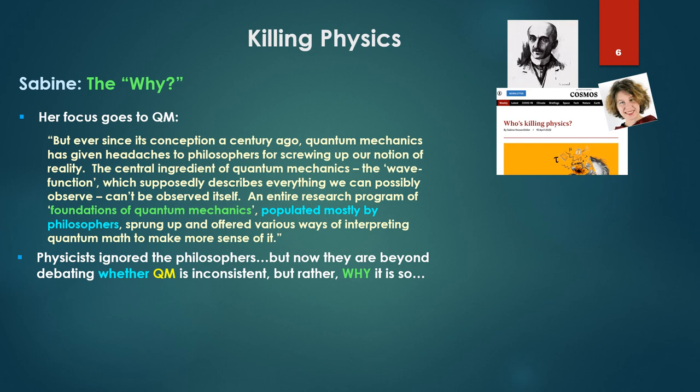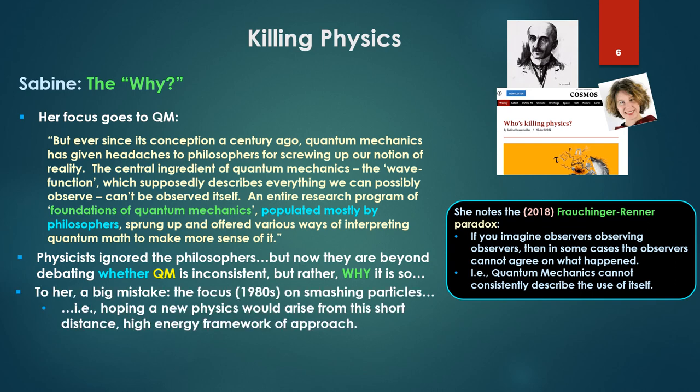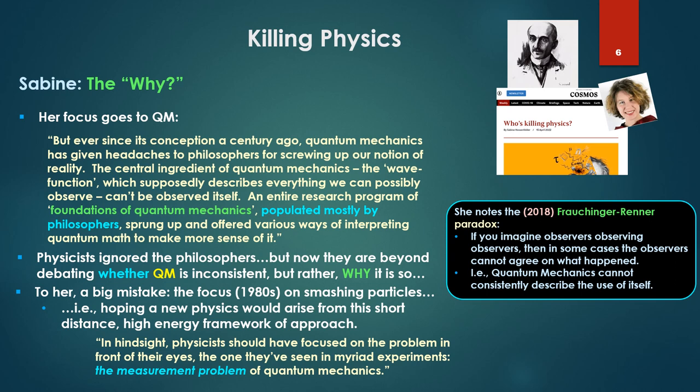The philosophers play an interesting role in her thought here. Ultimately, physicists ignore the philosophers, but now they are beyond debating whether quantum mechanics is inconsistent, but rather why it is so. And she notes a recent paradox, the Frauchiger-Renner. If you imagine observers observing observers, then in some cases, the observers cannot agree on what happened. Quantum mechanics cannot consistently describe the use of itself. Disconcerting. To her, a big mistake: the focus around the 1980s on smashing particles, hoping that new physics would arise from the short distance high energy framework of approach.